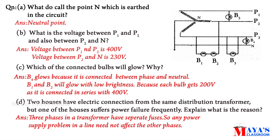P1, P2, P3 are the three phases. The voltage between P1 and P2 is the two-phase line voltage, that is 400V. The voltage between P2 and the neutral is the phase voltage, that is 230V.